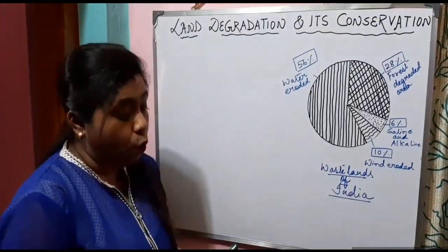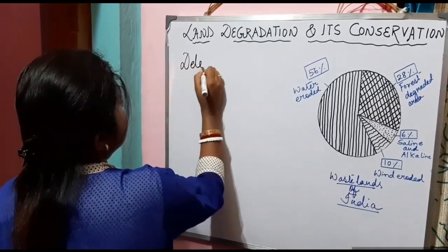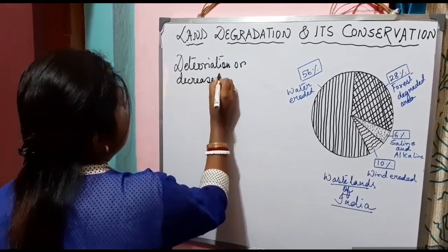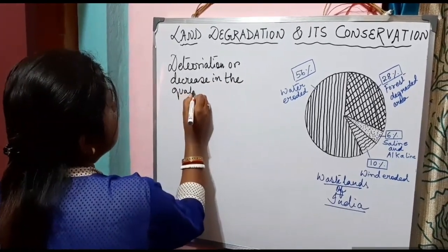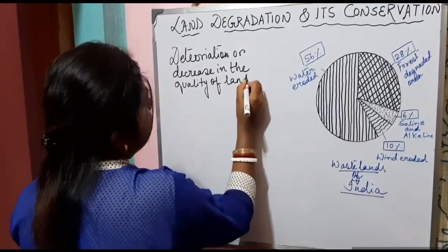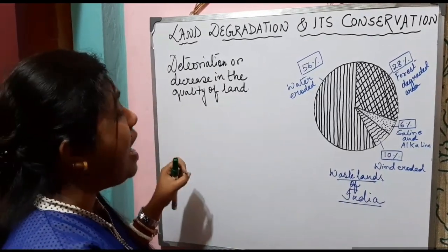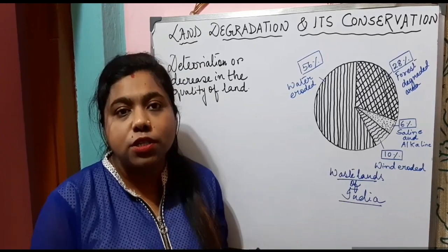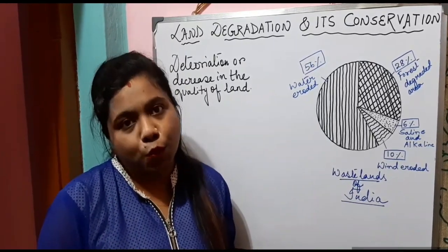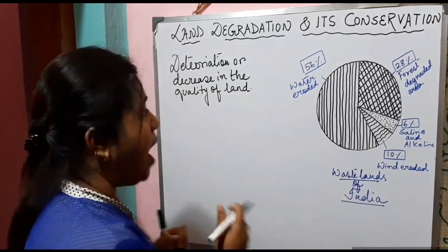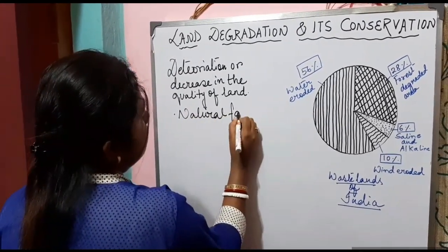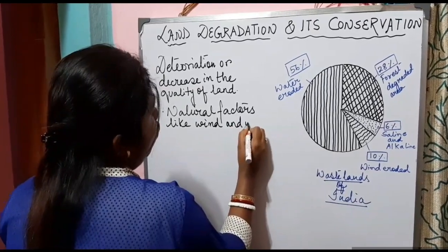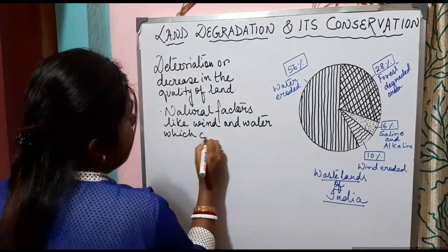We are extensively utilizing the land resources for fulfilling our various needs at an excessive rate, which is leading to land degradation. Land degradation means deterioration or decrease in the quality of land. This deterioration or decreasing quality of land is a result of continuous use of land resources for a long time without taking appropriate measures for conservation and management.